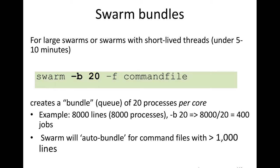If you type swarm -b 20 -f command file, that would create a bundle, a queue of 20 processes. Those 20 processes would run sequentially on a single core.